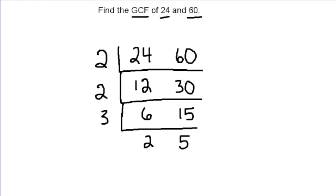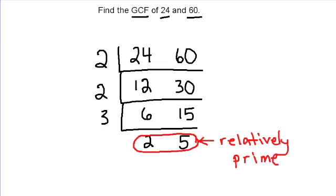Now, 2 and 5 are, there's no common factors. So what we can actually say is that these two numbers are relatively prime, meaning they have no common factors. So that's how we know we're done, when those two numbers at the bottom are relatively prime.